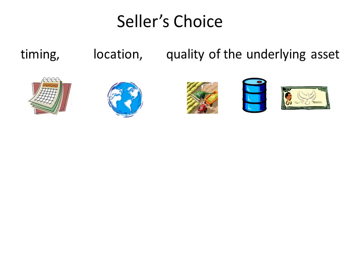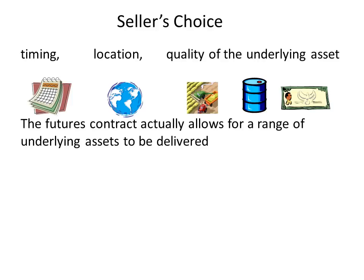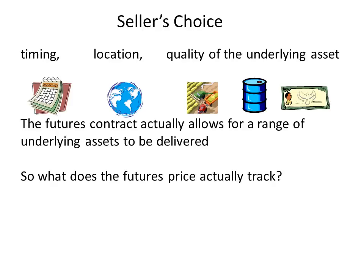For financial futures contracts — say, those based on government bonds — there is often a choice of bonds that can be delivered, where the coupon and remaining maturity of the bond varies. This has to be taken into consideration, particularly from the buyer's perspective. The buyer knows that a range of different assets can be delivered, and this may affect their decision as to whether they want to hedge in the first place, or whether they want to hedge right through to maturity date.